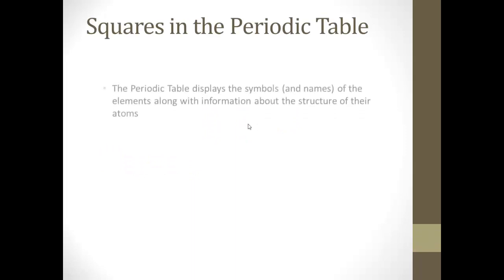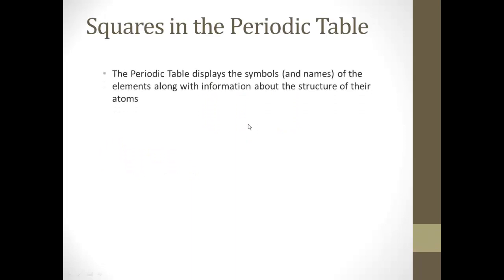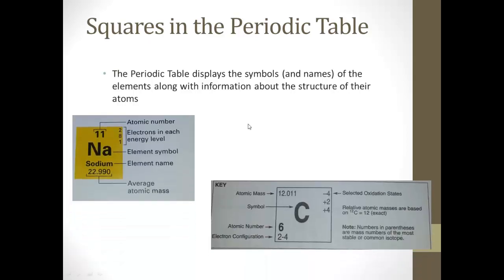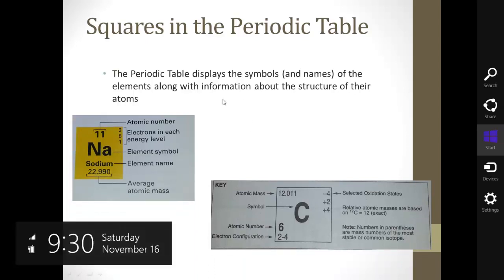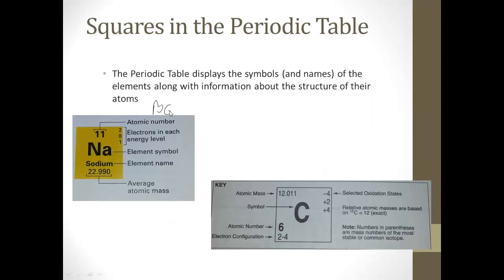First we're going to take a look at the little squares in the periodic table, and it displays the symbols and names of their elements along with information about the structure of their atoms. And here's two samples, right? Here's one that's in the book, and here's one from the reference table.